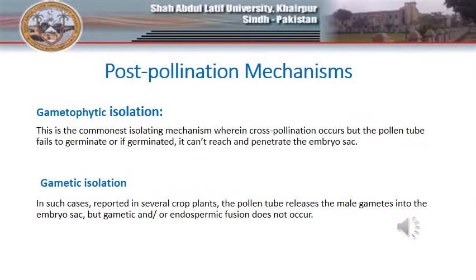If pre-pollination mechanisms fail to operate, post-pollination mechanisms play their part. The first is gametophytic isolation, in which the pollen tube fails to germinate or cannot reach or penetrate the embryo sac. In the second step, if the pollen tube does germinate and transfers male gametes into the embryo sac, the endospermic fusion does not occur. Gametic isolation refers to the physical or chemical incompatibility of gametes of two different species — if gametes lack receptors to facilitate fusion, they cannot form a zygote.